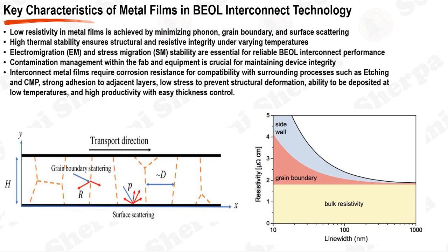The metal thin films used in BEOL interconnects require a diverse range of properties. One key characteristic is low resistivity — this involves minimizing three primary factors that obstruct electron flow: phonon scattering, grain boundary scattering, and surface scattering. Phonon scattering can be reduced by increasing grain size to minimize defects, while grain boundary scattering can be minimized by reducing the surface area of grain boundaries. Surface scattering, which occurs at the interface and surface of the metal film, can be reduced by lowering surface roughness.